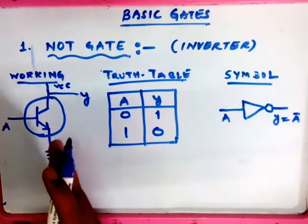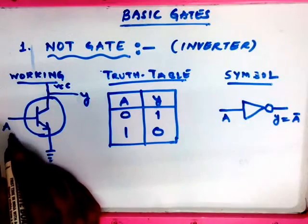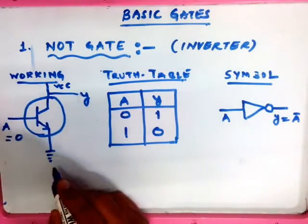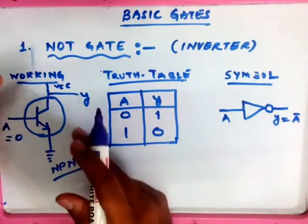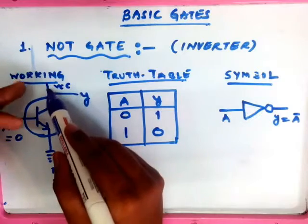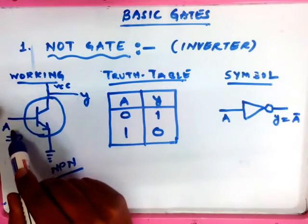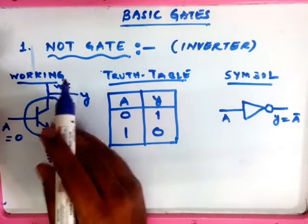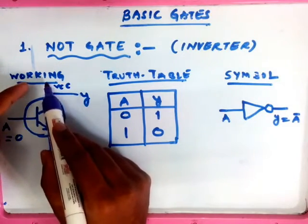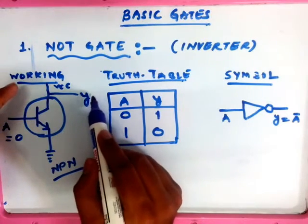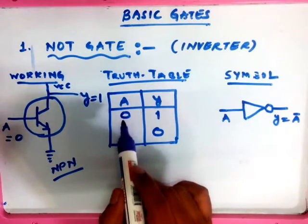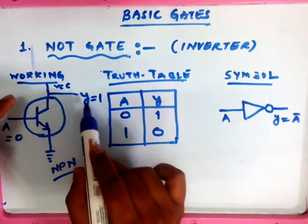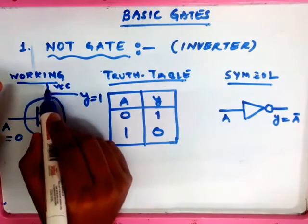Now, coming to the working of the NOT gate: when you apply input as 0 to the base — this is the base, collector, and emitter of the NPN transistor — and we have a VCC DC supply connected at the collector junction. When you give the base input as 0, this circuit will be off. The transistor goes off, and the VCC connected to the collector comes directly to the output, making it 1. So our truth table is verified: when input is 0, the transistor is off and the output is 1.